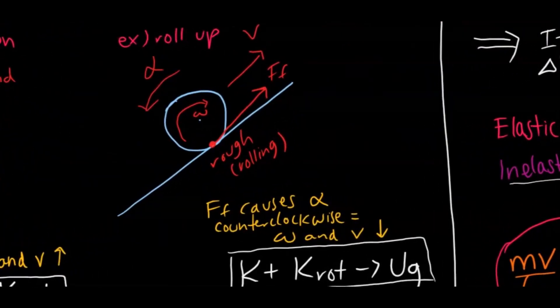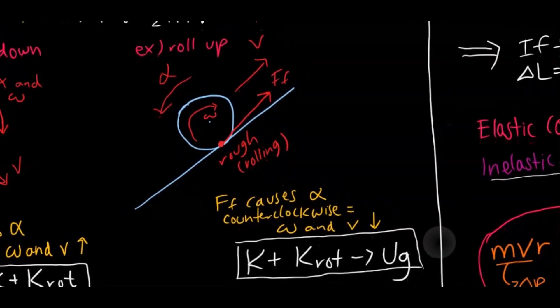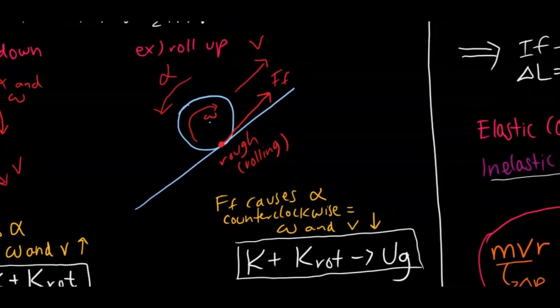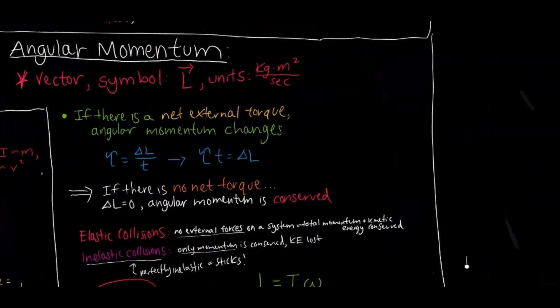When the ball is rolling up, the force of friction points upward, causing a counterclockwise angular acceleration. The ball has an initial angular velocity pointing clockwise, but friction causes counterclockwise angular acceleration, so both angular velocity and linear velocity decrease. For energy, it starts with translational plus rotational kinetic energy, and that all converts to gravitational potential energy, assuming the ball stops at the top.